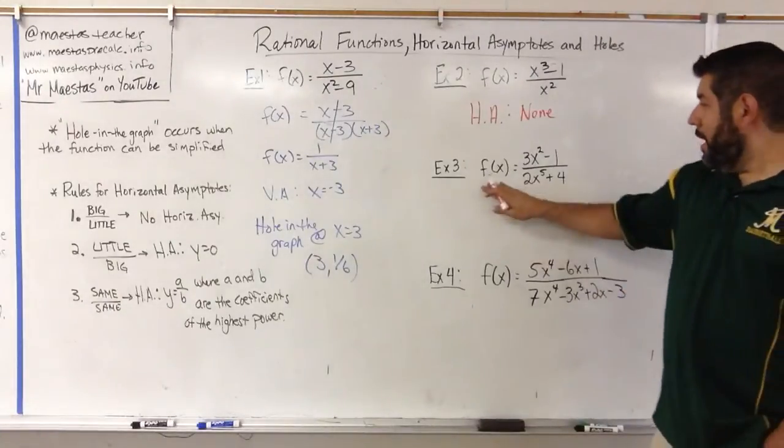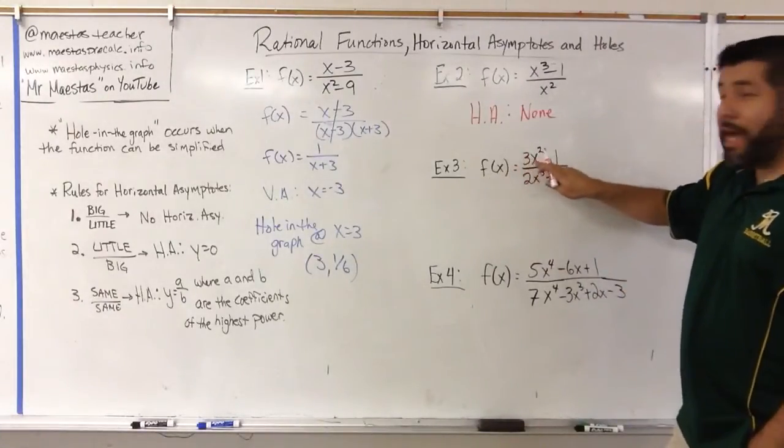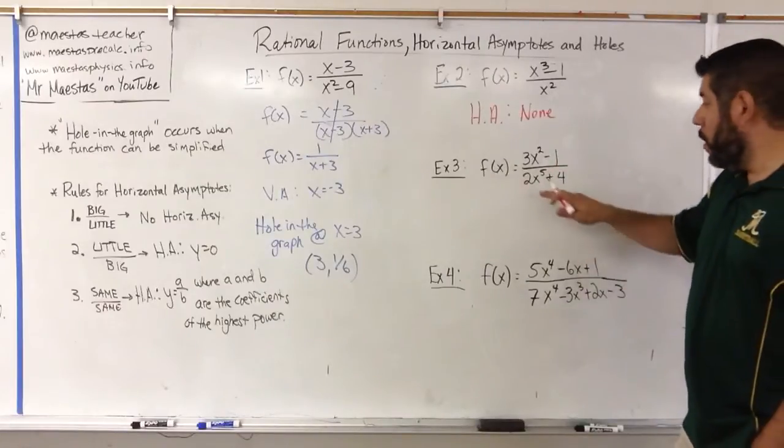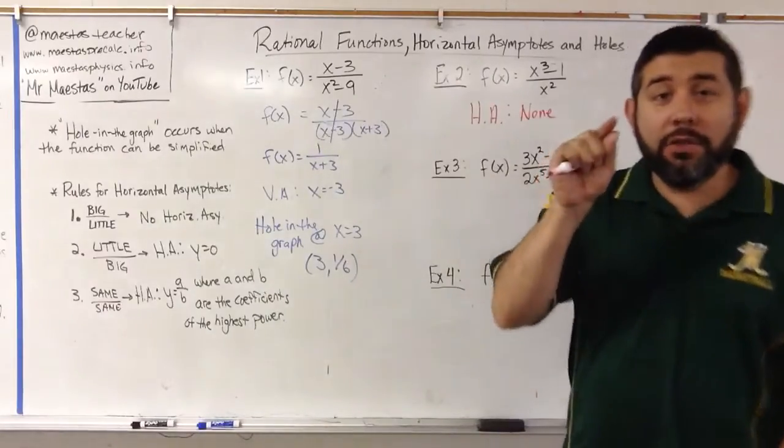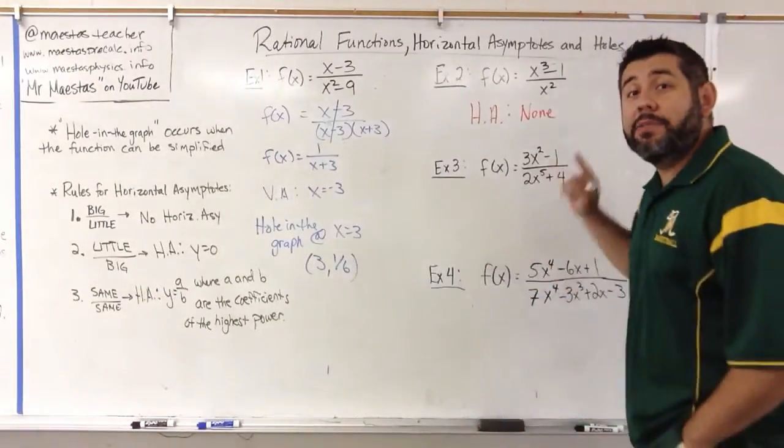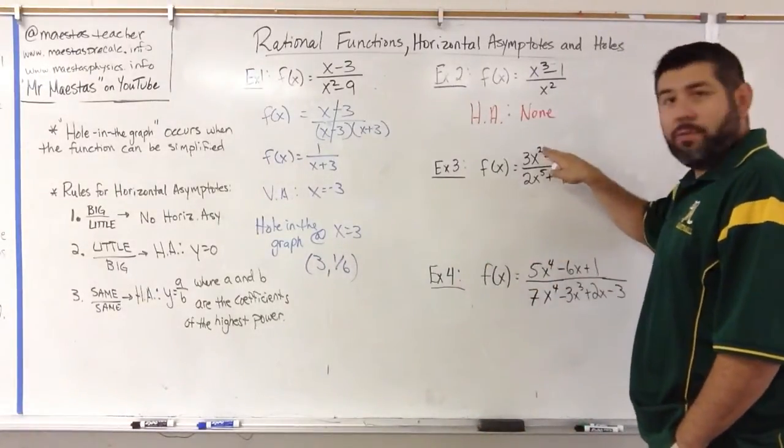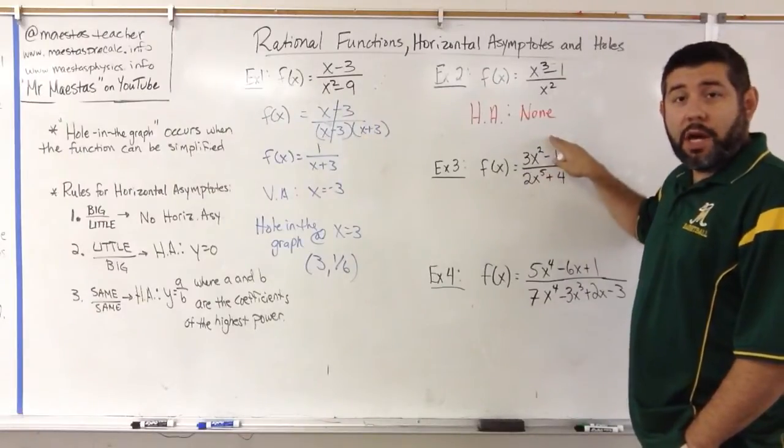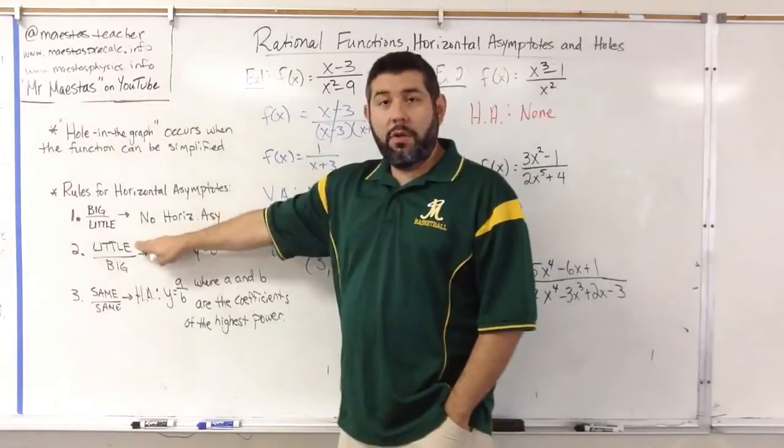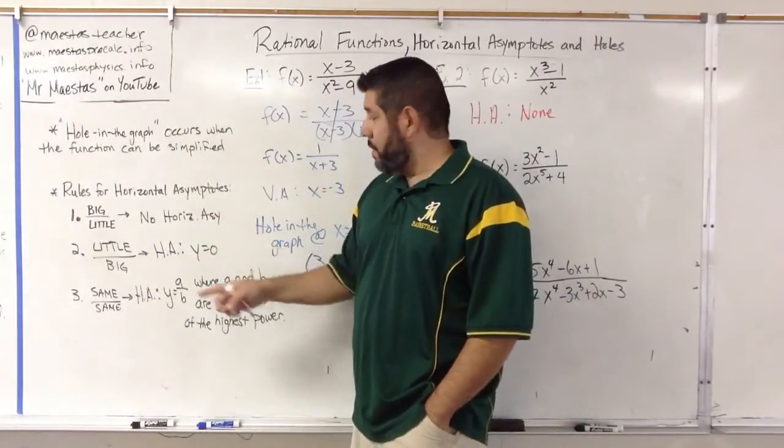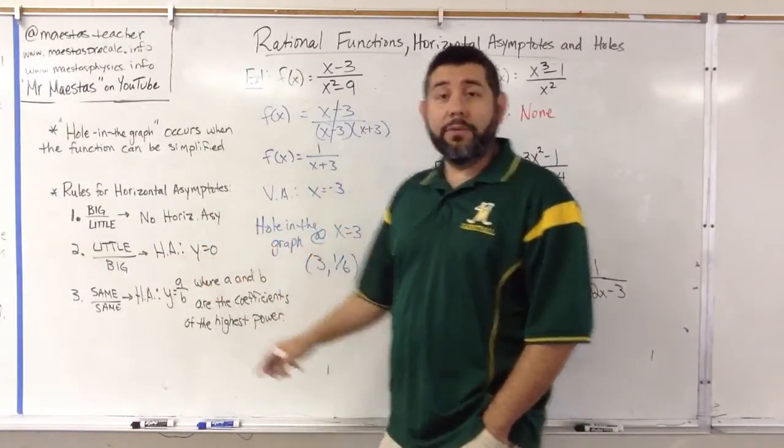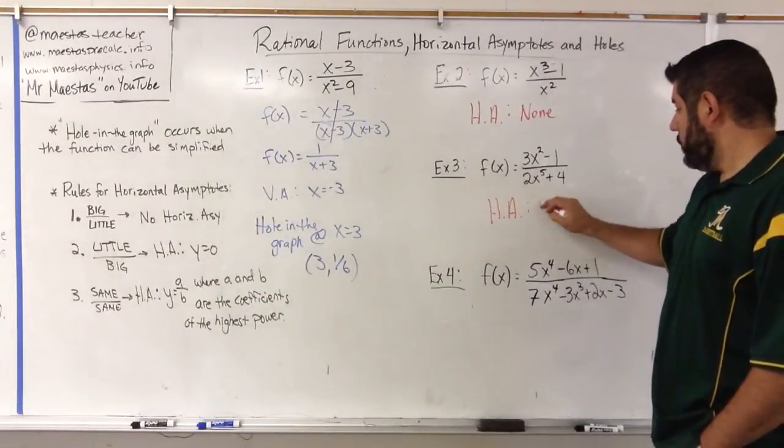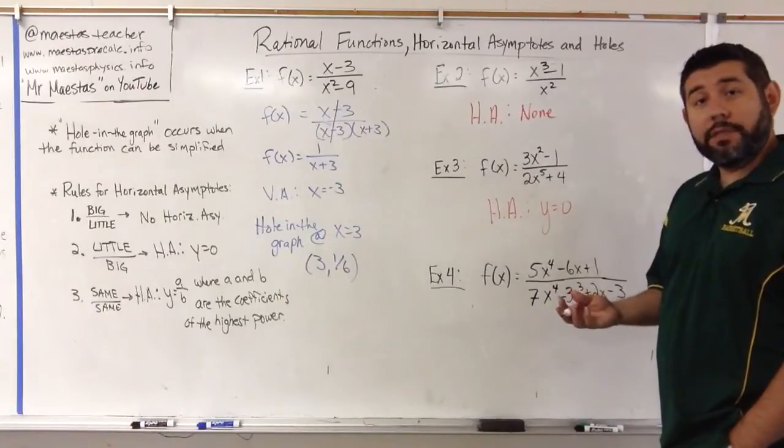f(x) equals 3x squared minus 1 over 2x to the fifth plus 4. Again, zone in on the highest power of x. x squared. x to the fifth. The bottom is bigger than the top. Little over big always is going to have a horizontal asymptote of y equals 0. That's it. Move on.